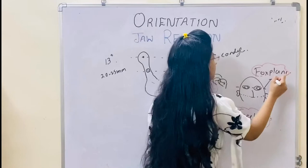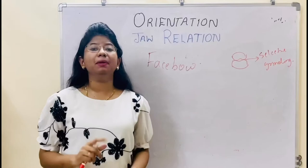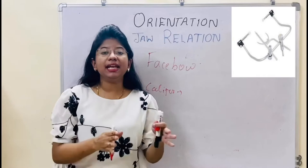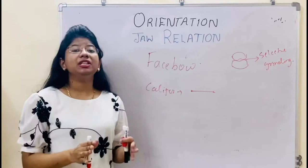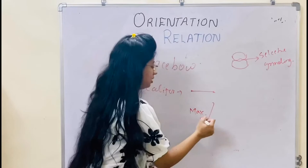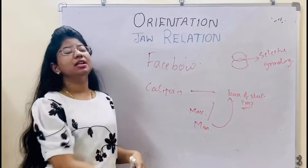Now we will see the different types of face bows. What is a face bow? A face bow is a caliper-like device. Caliper means it is measuring any dimension — interior, exterior, or the distance between two points. So a face bow is a caliper-like device which is used to record the relation of maxilla or mandible to the base of the skull or the temporomandibular joint. Basically, it records the orientation relation.